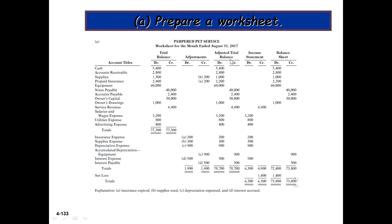The adjusted trial balance — both sides will be equal at $1,900. For cash, there is no adjustment. For accounts receivable, no adjustment. For supplies, there is a debit and credit adjustment — after adjustment we get $1,000. Prepaid insurance was $2,400, and with the $200 adjustment it becomes $2,200.